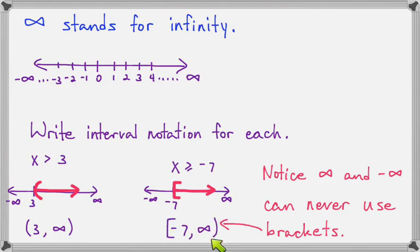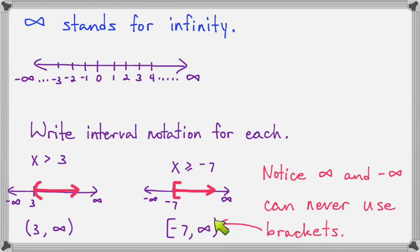Notice that even though there's a bracket on the negative 7, there can't be a bracket on the infinity side. It's okay for one side to have a bracket and the other a parenthesis, because the infinity symbol is not really a number you can reach — it's actually just an idea, something we go toward, not something we ever achieve. It's a lot like tomorrow from the song in Annie: infinity is always past what we can reach. Since we can't actually get to it, we can't put a bracket on it. So the infinity symbol always gets a parenthesis.